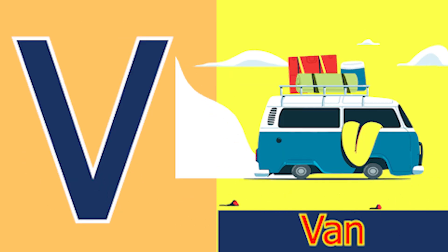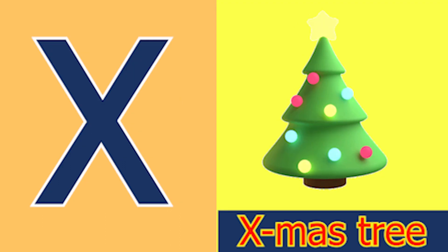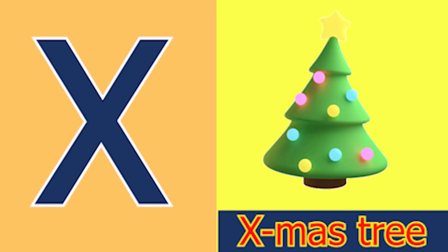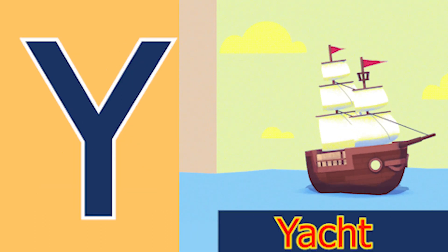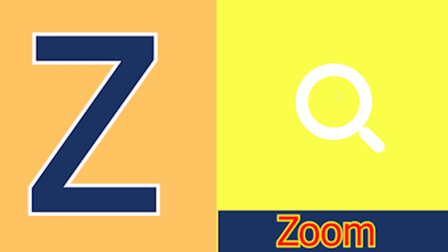V for van, W for wheel and X for accessory, Y for yacht and Z for zone.